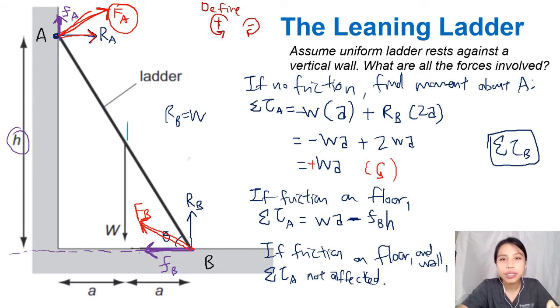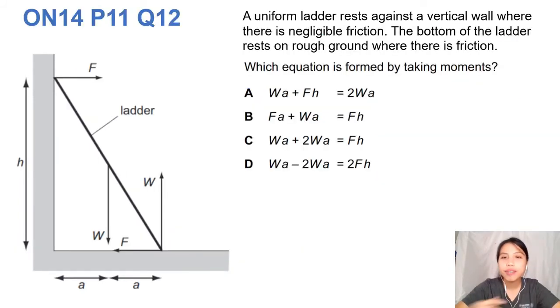Let's look at the example question. Here's the example of ladder moments. So here they tell us a uniform ladder rests against a vertical wall. Rest is a key word. Rest means equilibrium. Negligible friction. What has negligible friction again? The wall, the wall. The wall has negligible friction. The bottom of the ladder rests on the ground where there is friction. So ground has friction. You see the picture F. The wall has no friction. So they draw it separately for us.